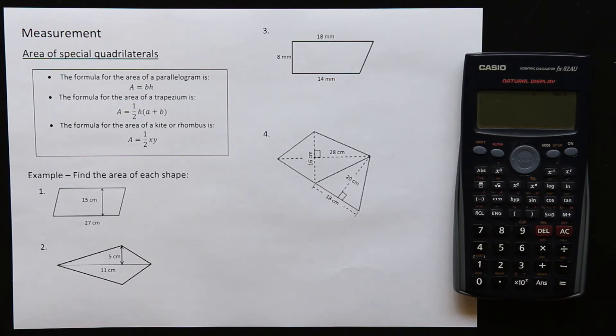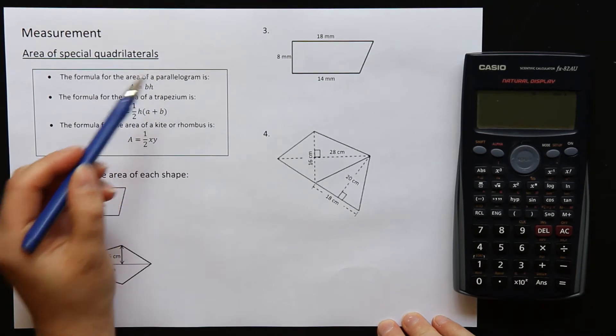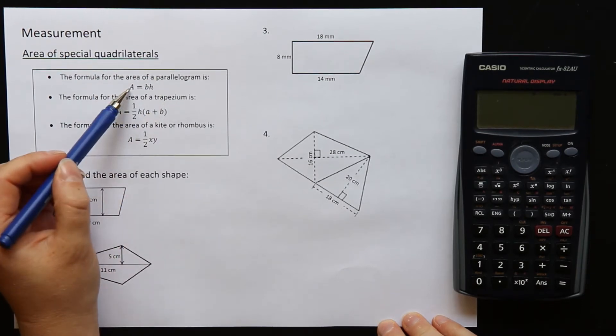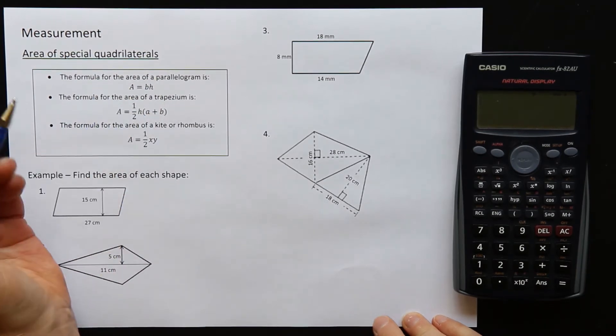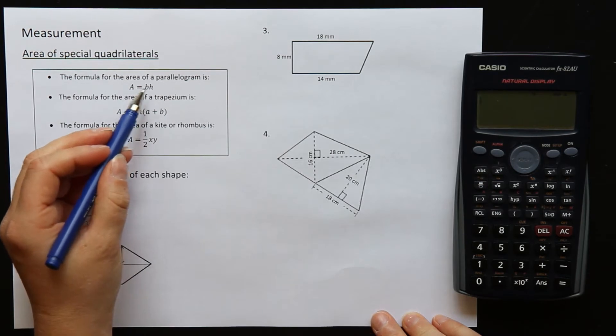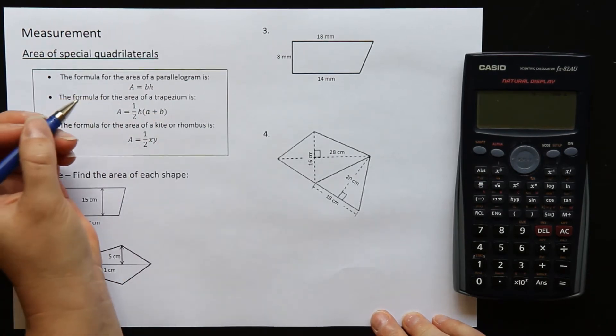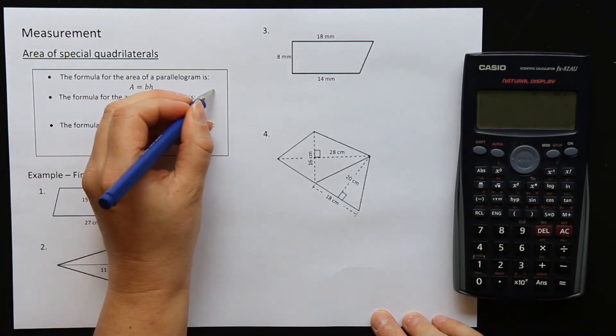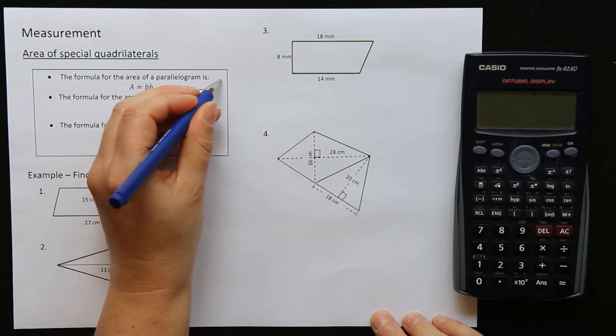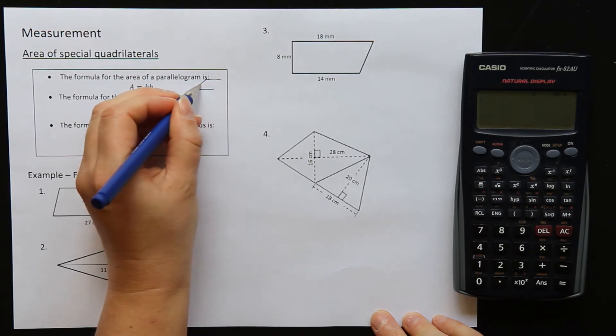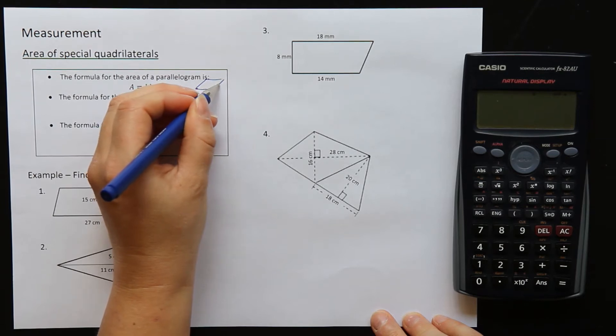The quadrilaterals we're looking at are the parallelogram. The formula for the area of a parallelogram is A equals base times height. That is exactly the same as a rectangle, but for a parallelogram, if I just draw a little one over here, a parallelogram is a pushed over rectangle.